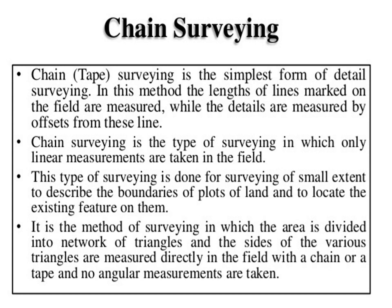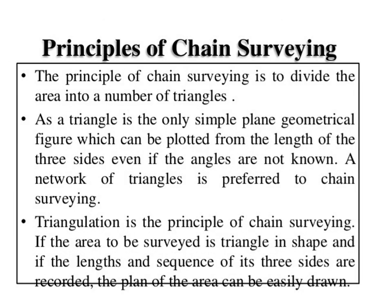The principle of chain surveying is to divide the area into a number of triangles. A triangle is the only simple plane geometrical figure which can be plotted from the length of three sides even if the angles are not measured. A network of triangles is preferred in chain surveying — this is called triangulation. If the area to be surveyed is triangular in shape and if the length of the three sides are recorded, the plan of the area can be easily drawn.